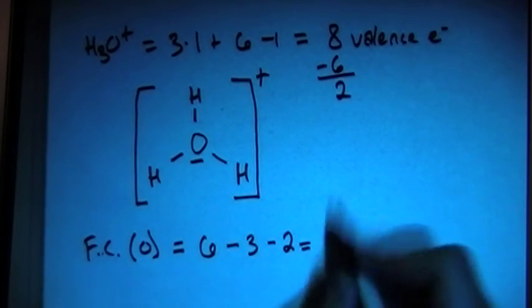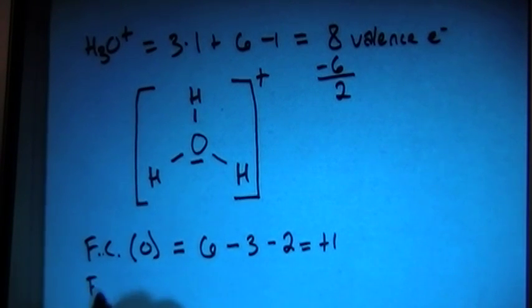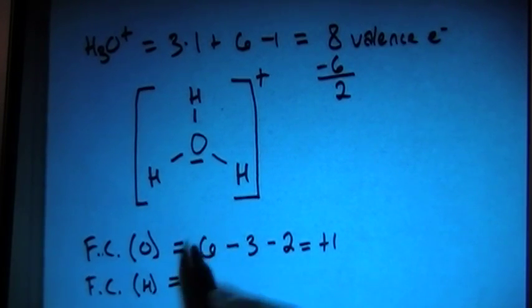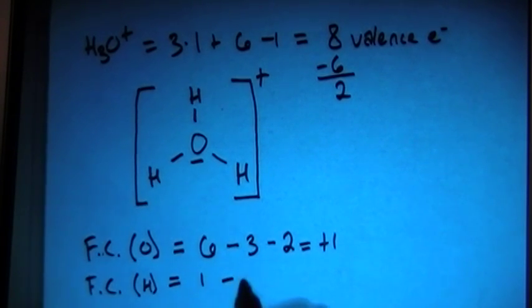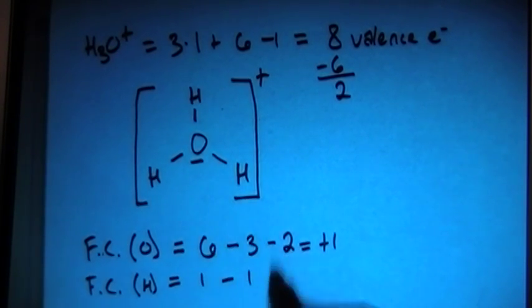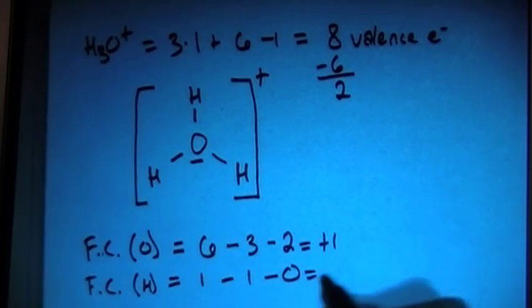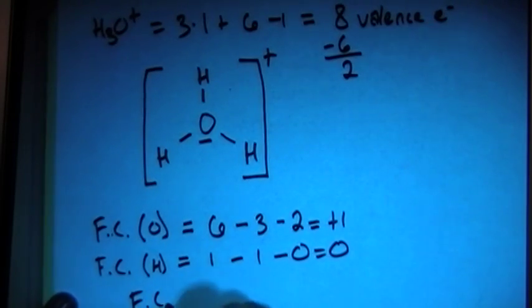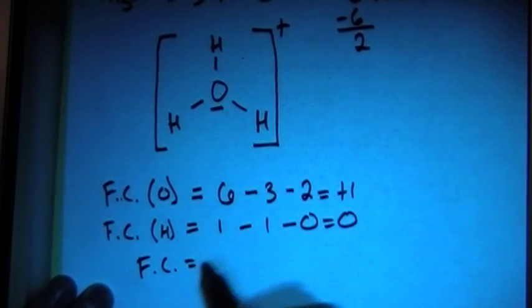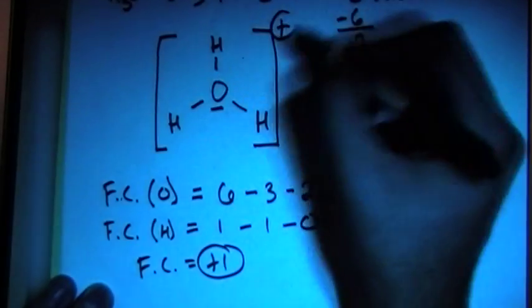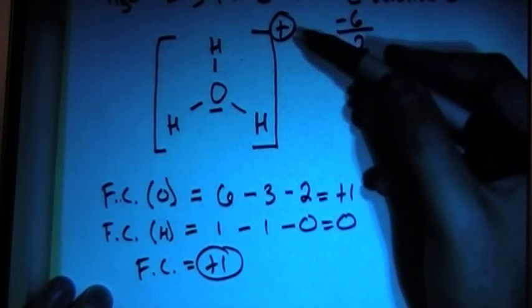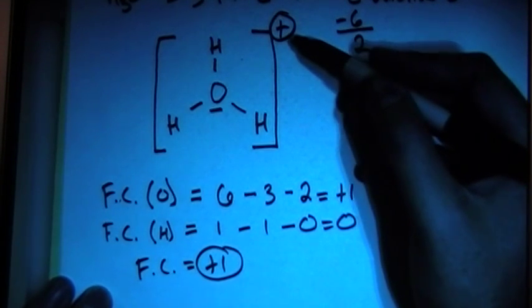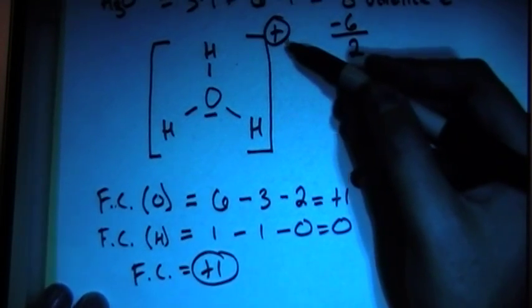So six minus three minus two is going to give us plus one. And then the formal charge on the hydrogen. And notice each hydrogen has the same setup, so this formal charge will be the same for each of them. It's going to be one valence brought in minus one bond for each hydrogen, minus zero non-bonding electrons. It gives us a formal charge of zero. So if we sum these up, the overall formal charge is going to be equal to plus one, which matches the charge on the ion itself, which is what you're supposed to have happen when you're drawing the Lewis structures for charged particles, ions.